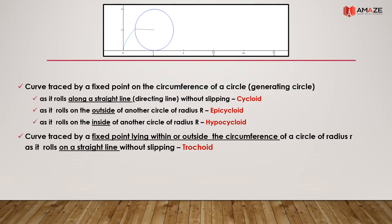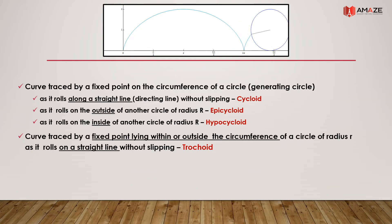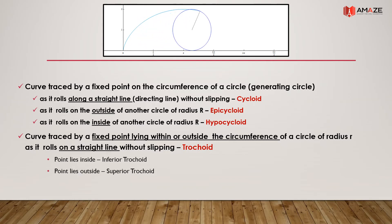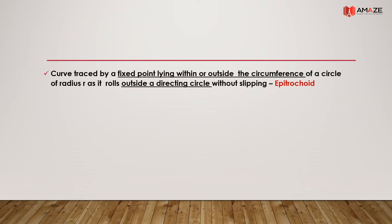A curve traced by a fixed point lying within or outside the circumference of a circle as it rolls on a straight line without slipping is also related to the cycloid family. If the point is inside, it is called an inferior cycloid; if the point is outside, it is a superior cycloid. Similarly, when the circle rolls outside a directing circle, the curve is called an epitrochoid — inferior if the point is inside, superior if outside.